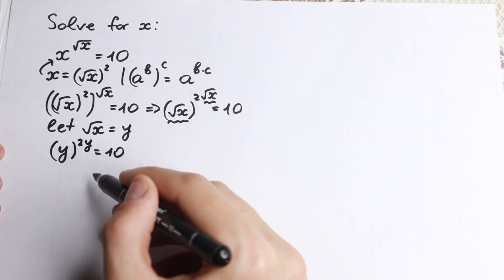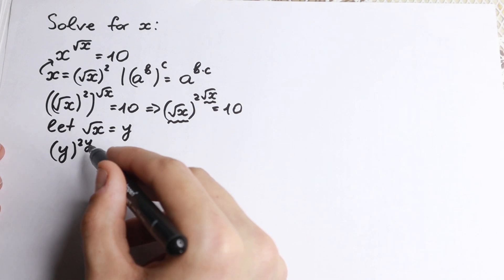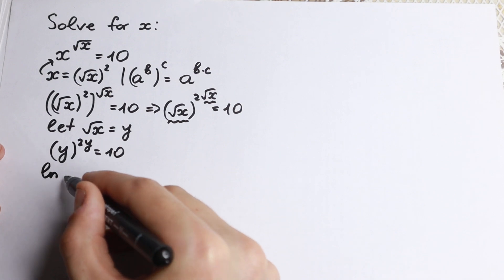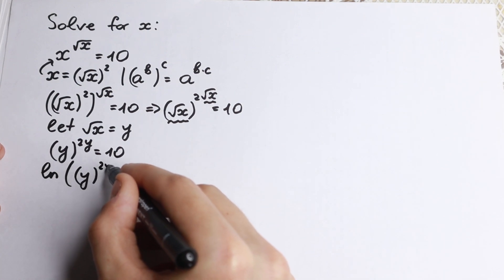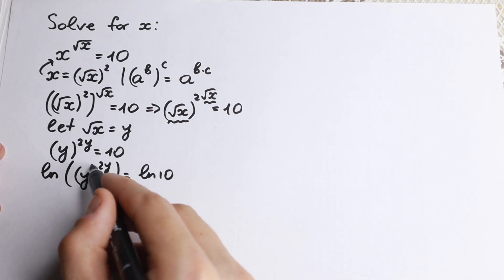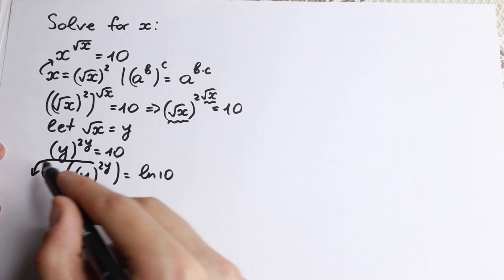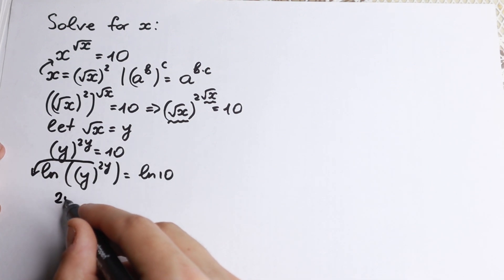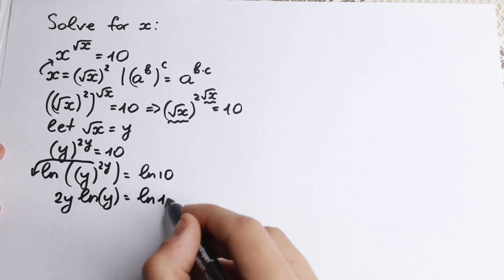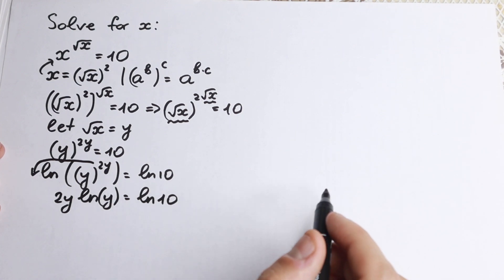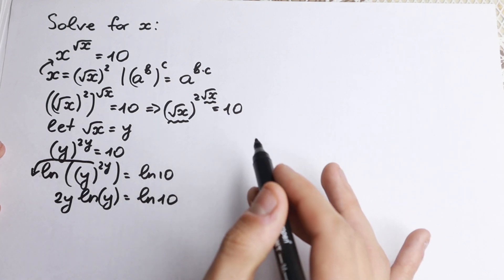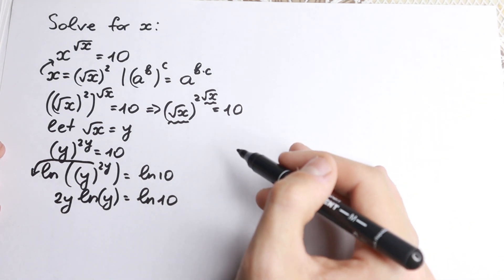Since we have exponents and powers, we can apply the natural log on both sides. Writing natural log of y to the power 2y equal to natural log of 10, we bring the exponent 2y down to the front. As a result, 2y times natural log y equals natural log 10. This is classic school algebra with natural log, so nothing hard.